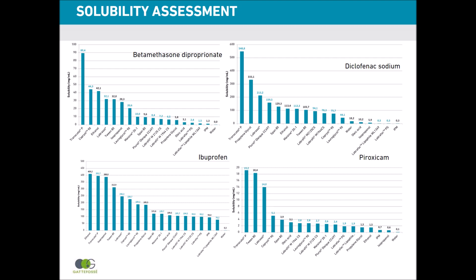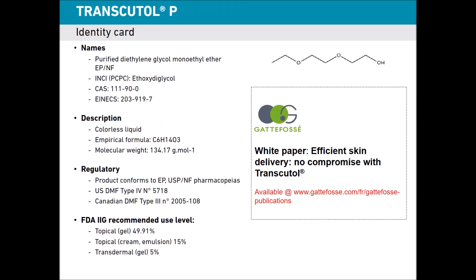In these examples, Transcutol P is always the first excipient that solubilizes the highest amount of drug, generally followed by Capryol 90, Labrasol, or Plurololeic. It is interesting to see that for different chemical drugs we get the same results. Transcutol P merits special attention for its remarkable solubilizing properties and safety profile. It has been used in various topical dosage forms for decades and is listed in the IIAD with a level of use up to 50% in topical gel. A white paper called 'Efficient Skin Delivery Non-Compromised with Transcutol' is also available.